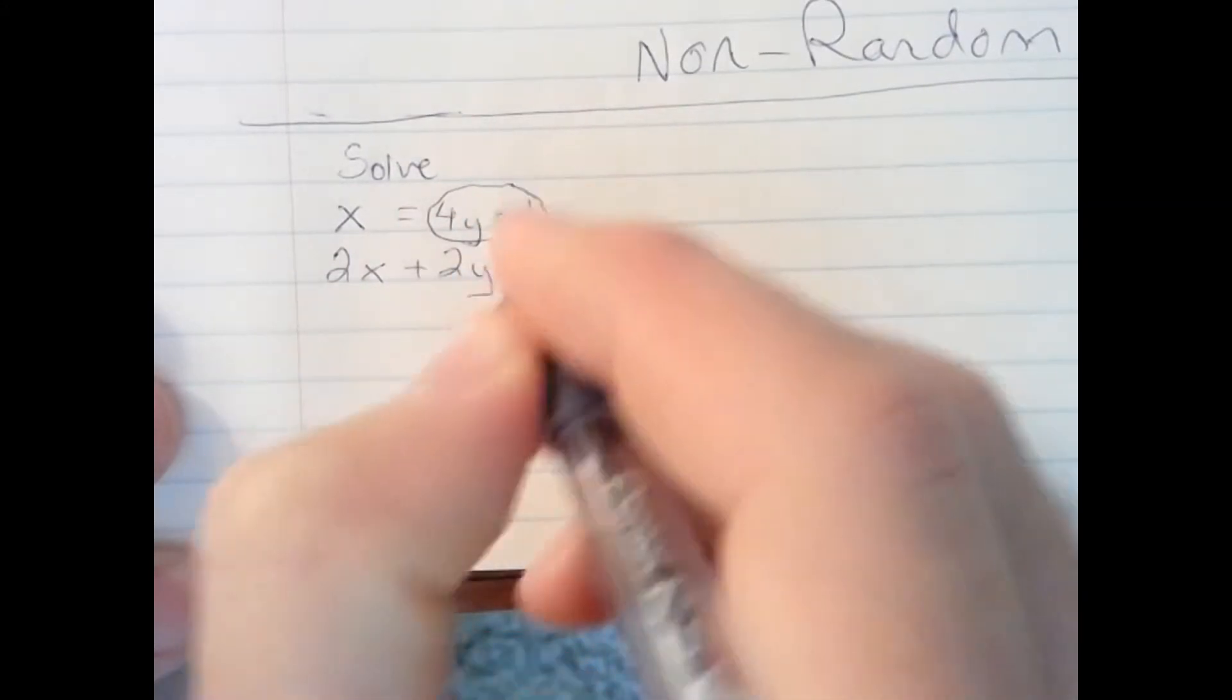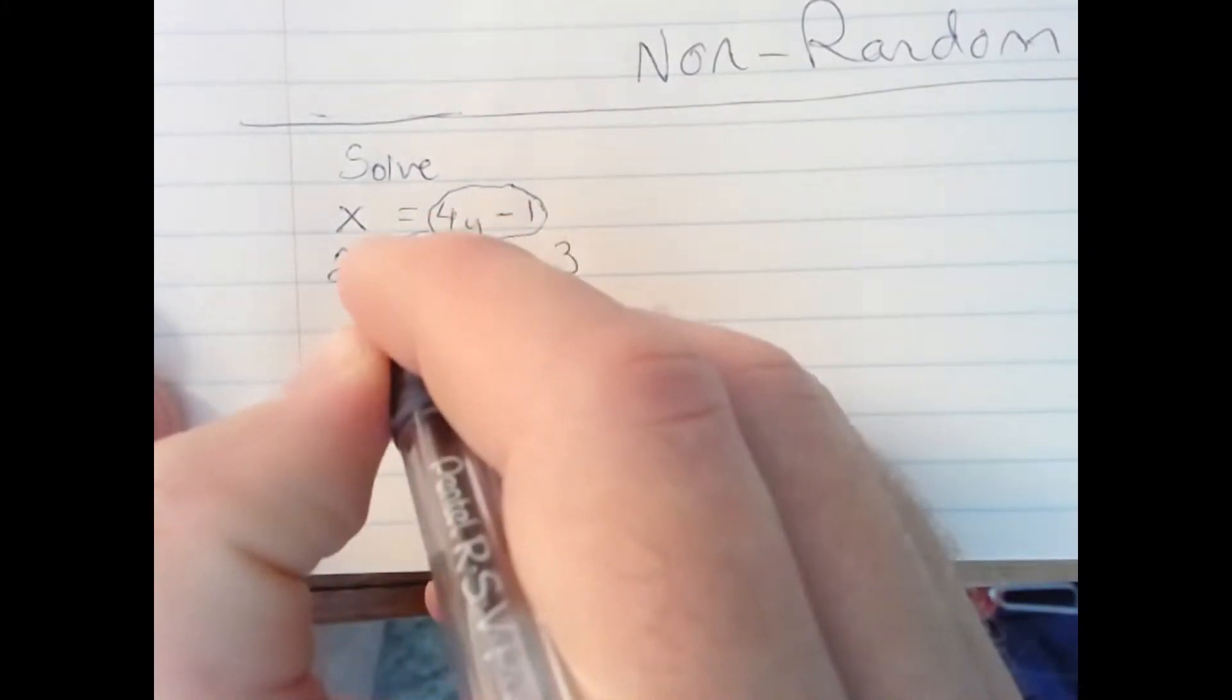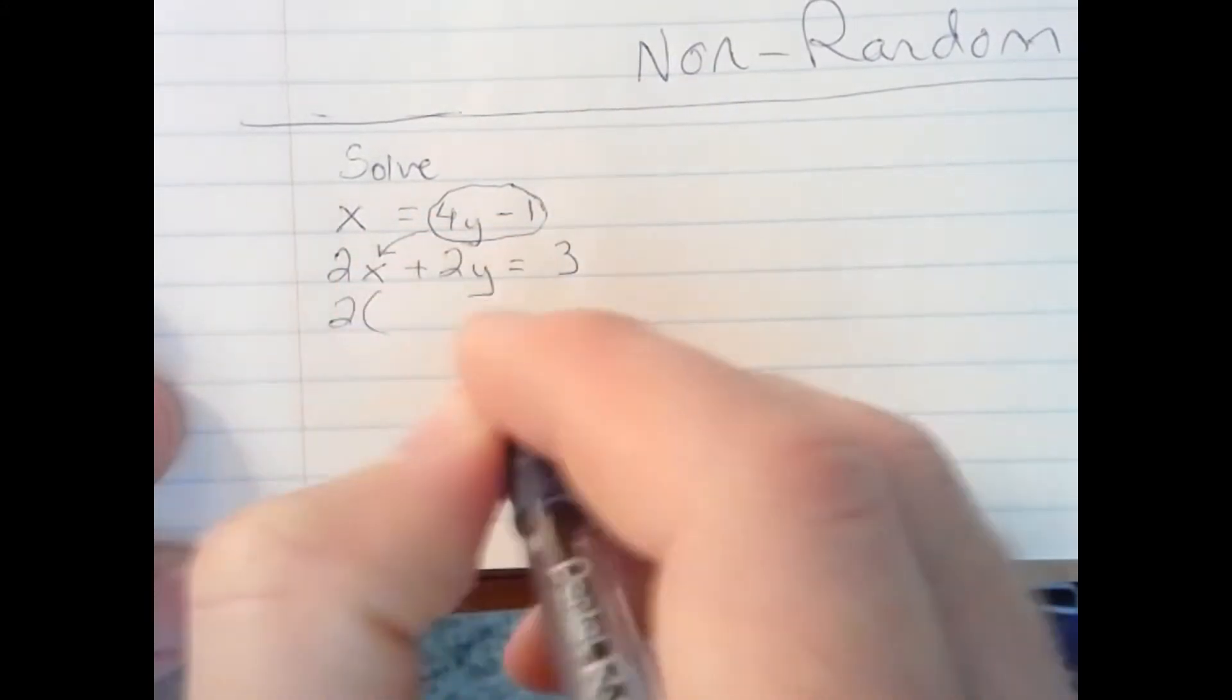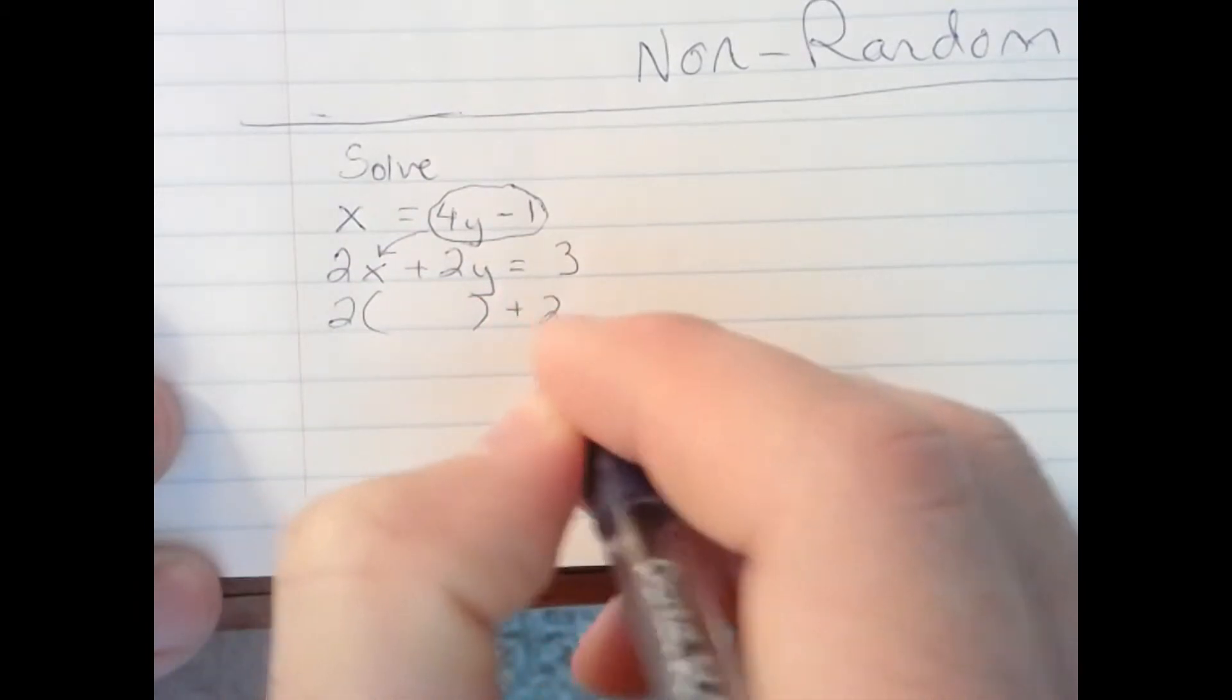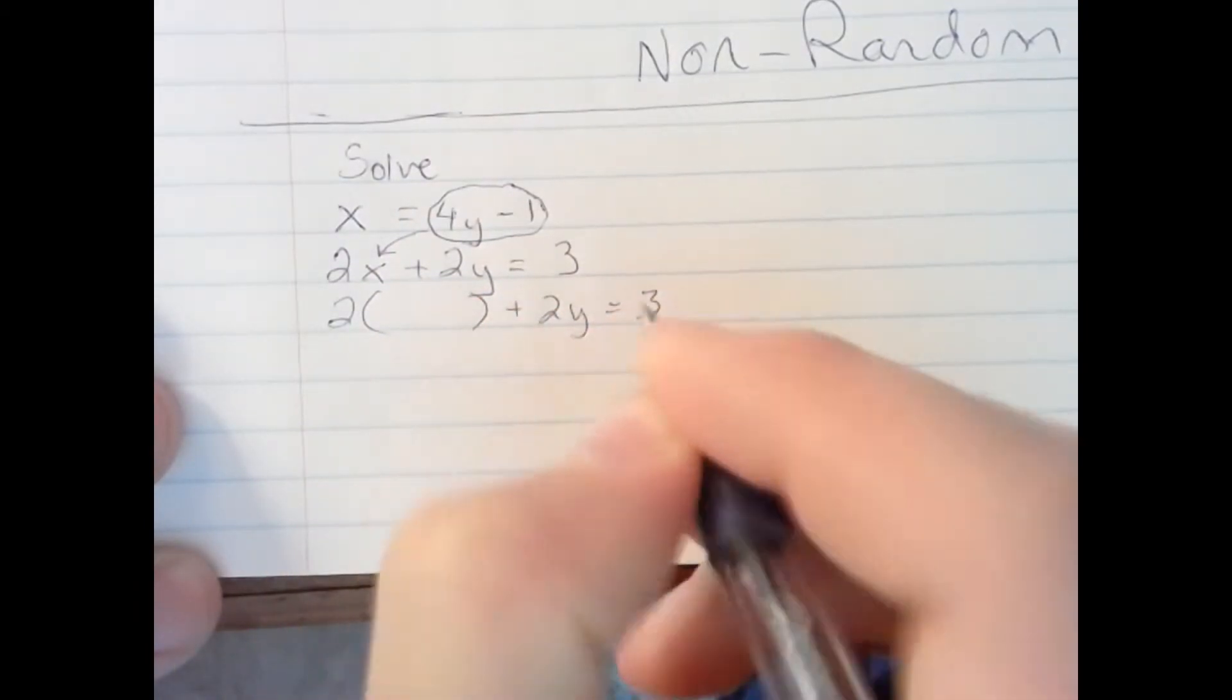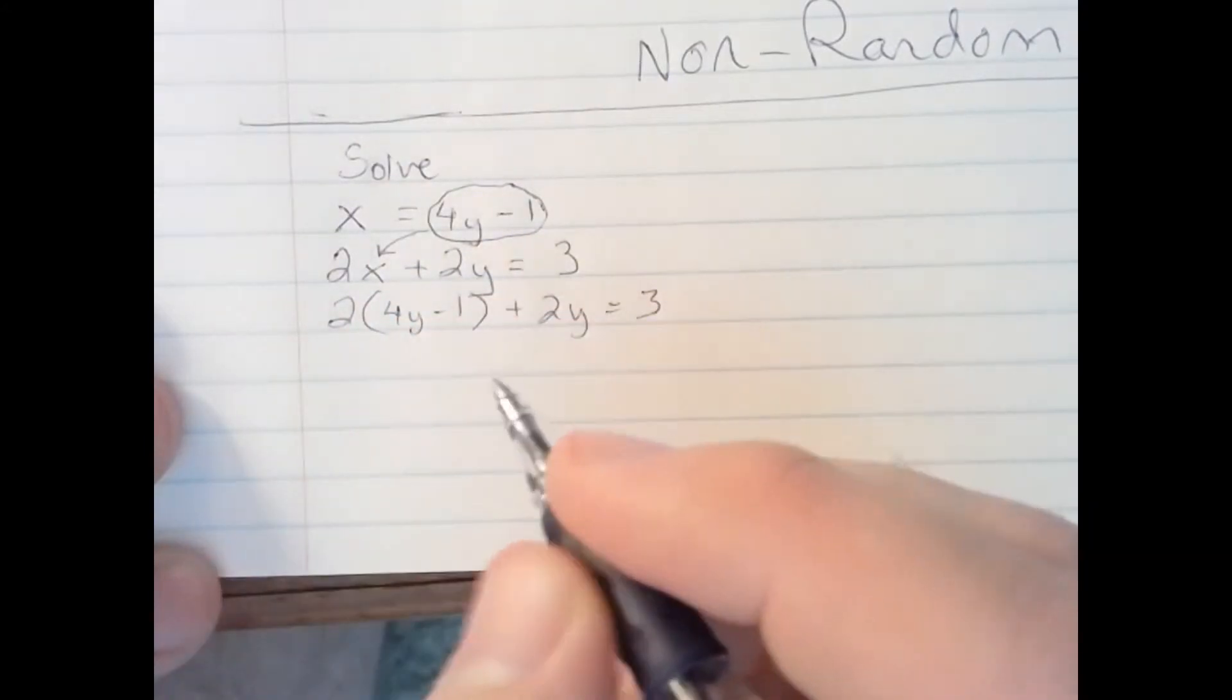I'm going to take the quantity of what x equals and substitute it in for x in the second equation. So I'm just going to rewrite the second equation, then write 4y minus 1 in for the quantity x.